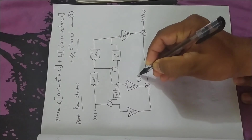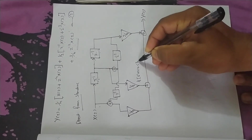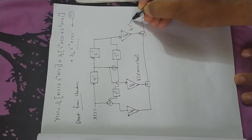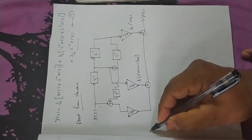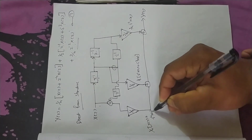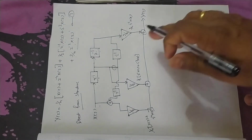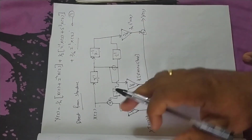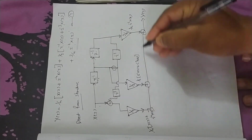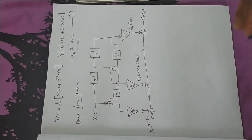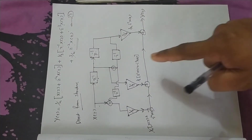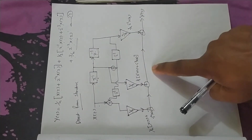1/4 z raised to minus 3 X(z) and here we are in this portion. 3/4 z raised to minus 2 X(z) and here we are in this portion. 1/4 into x(z) plus z raised to minus 4 X(z). Clear? We leave 1/2 z raised to minus 1 X(z). This is our direct form structure — this is simple.